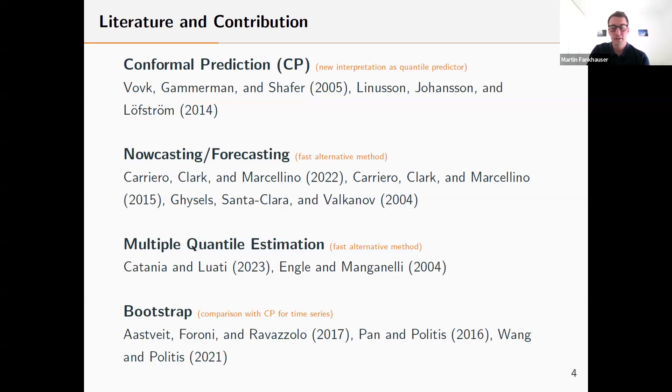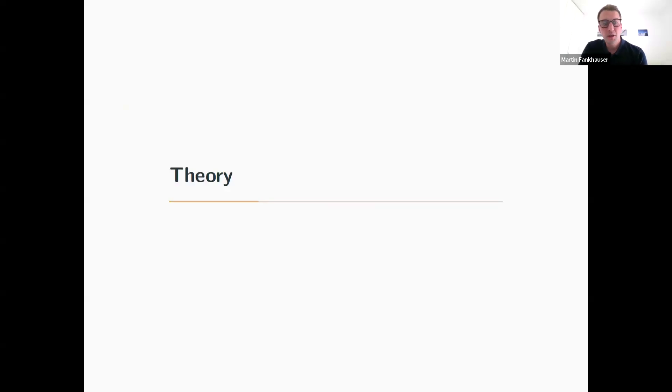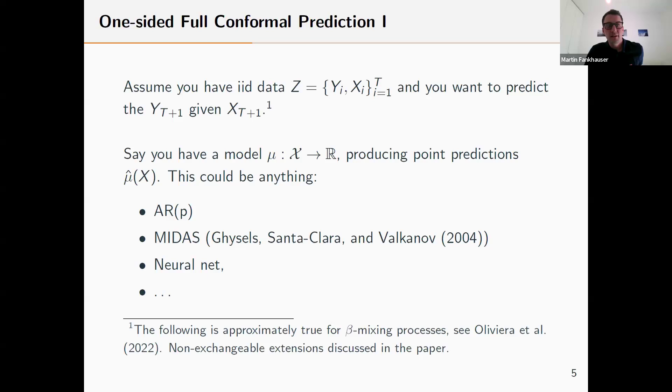Let's discuss briefly the theory behind this. For this talk, I will only show results for the exchangeable case, meaning the special case of IID data. However, everything I'm saying holds approximately if we move to more general dependence patterns in the data, so non-exchangeable data or beta mixing processes. The basic task is we observe data Y and X, a sample of size T, and we want to predict Y_{T+1} given the regressor X_{T+1}. You have a model, some point predictor producing mean predictions, which could be anything.